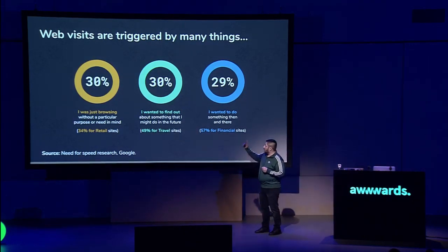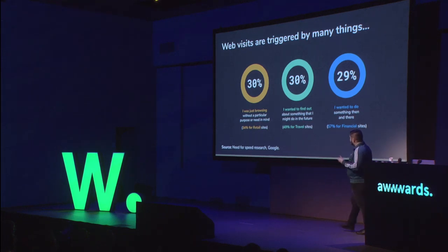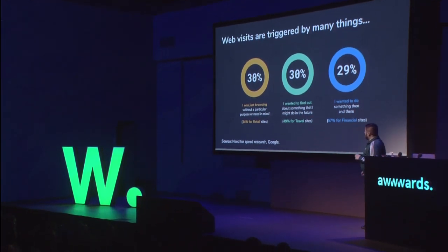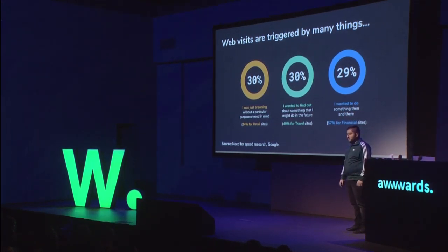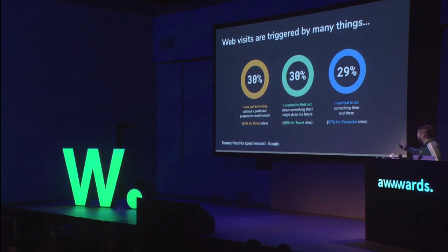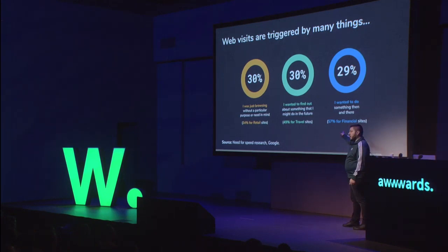Let's go on to intention. 30% of users on the mobile web are just window shopping — they have no intention, just at a doctor's office or bus stop. This goes up to 34% for retail sites. 30% actually want to find something out they might do in the future — this goes up to 49% for travel sites. 29% of people actually want to do something there and then — this goes up to 57% for financial sites, because no one checks out insurance for a laugh. The question is, like the Financial Times: can we get people to jump from one bucket to another?